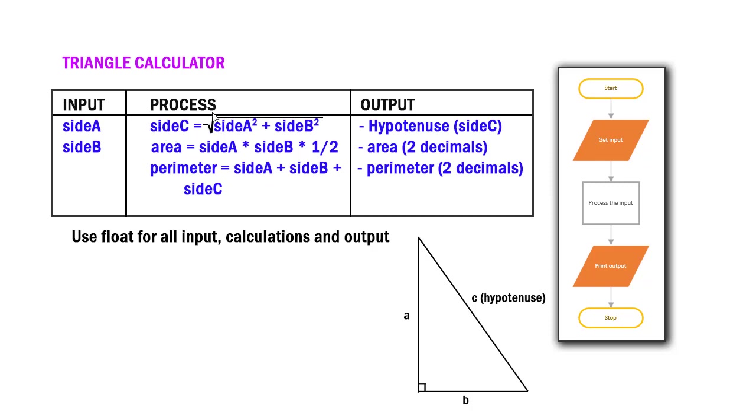You remember the Pythagorean theorem is that C squared equals A squared plus B squared. Therefore, the length of side C is the square root of side A squared plus side B squared. What we need to be able to do is convert that formula into a Python statement. We want to find the area of our triangle, and that's going to be side A times side B times one-half. And the perimeter is just the addition of the three sides.